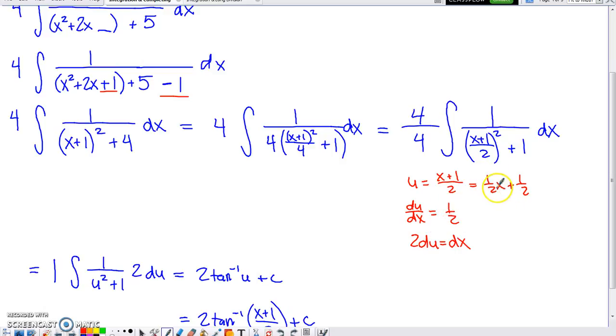Well, what's the derivative of u with respect to x? Well, the derivative of this is just 1 half. The derivative of this is 0. So what does dx equal? Well, multiply by the dx, multiply by the 2. This is what dx is equal to.